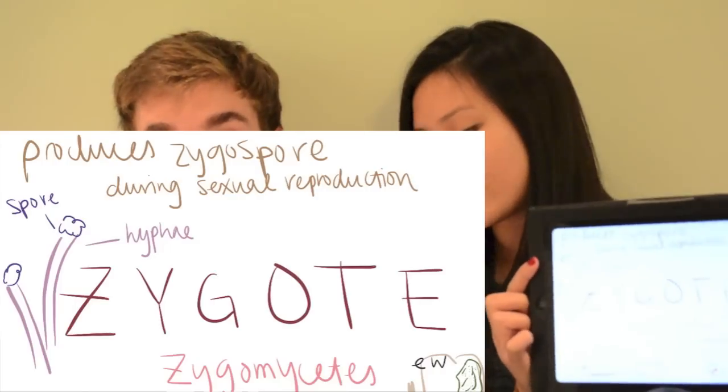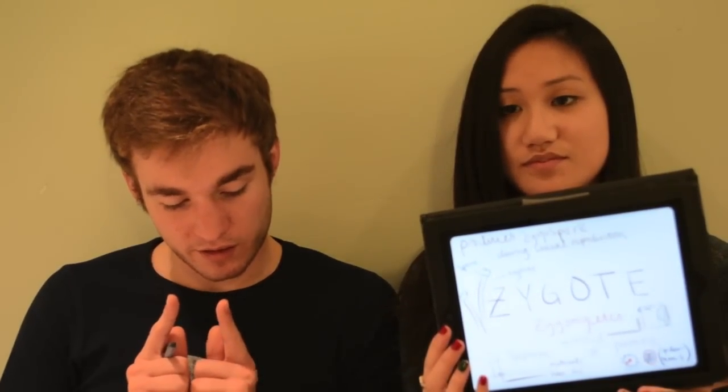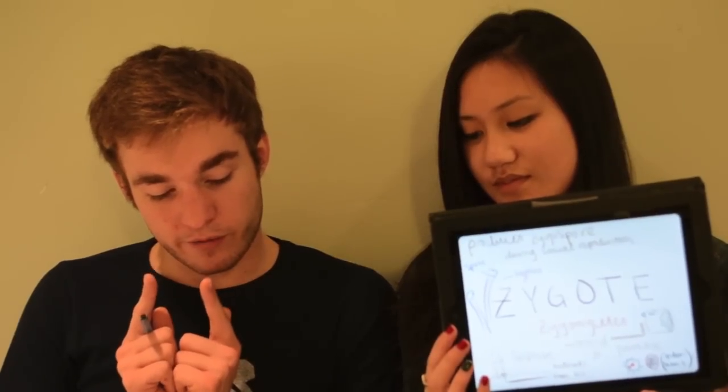Zygote fungi produce zygospores during their sexual reproduction, in which they have hyphae that cross over and spread spores. They can reproduce both sexually and asexually. The sexual reproduction happens when a plus and a minus hyphae meets. First the hyphae meets, the plus and the minus, then the gametangia forms at the tips of the hyphae. Then you have a cytoplasmic fusion, nuclear fusion after that, where a young zygospore forms and then it becomes a diploid zygospore. Once a zygospore, it goes through meiosis and once again becomes haploid, and this is when it produces spores, which it can then disperse and make new mycelium.